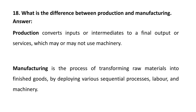Next question: what is the difference between production and manufacturing? Production converts inputs or intermediates to a final output or services, which may or may not use machinery. Suppose you are producing a component — machines are required — but if you are giving service to a customer, machinery may not be required; that is known as production. Manufacturing is the process of converting raw material into finished goods by developing various sequential processes, labors, and machineries.